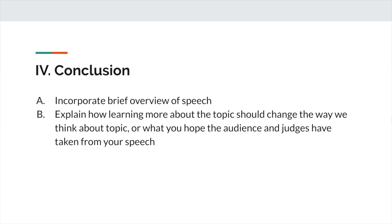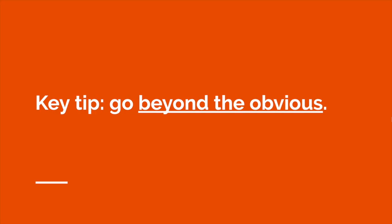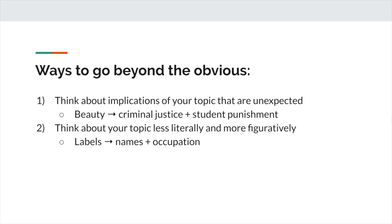One other thing that's really important when it comes to aspects is to go beyond the obvious. If all of your facts are things that people already know, it's the quickest way to make a speech very boring. Finding facts that are not obvious requires two things. First, think about implications of your topic that are unexpected. For the beauty speech, you would not have immediately guessed that beauty has anything to do with criminal justice and student punishment — finding out there's a connection between those things is really fascinating and something people wouldn't typically expect. A very boring or expected one with beauty would be that attractive people are more likely to get more date opportunities — that's something people would expect.